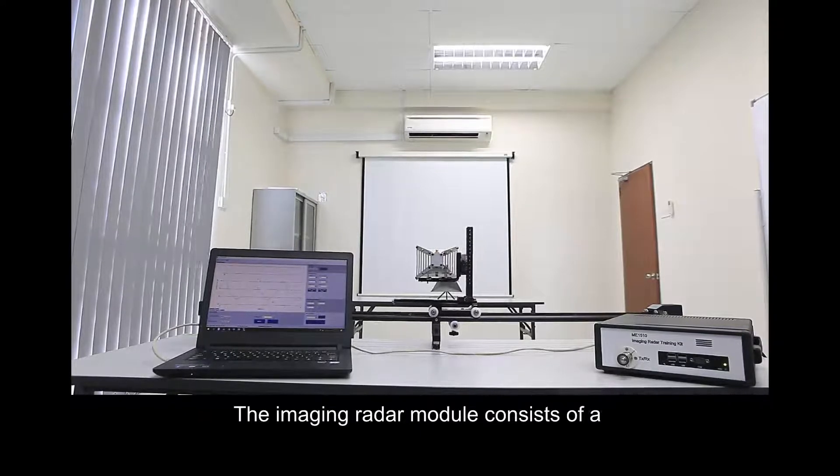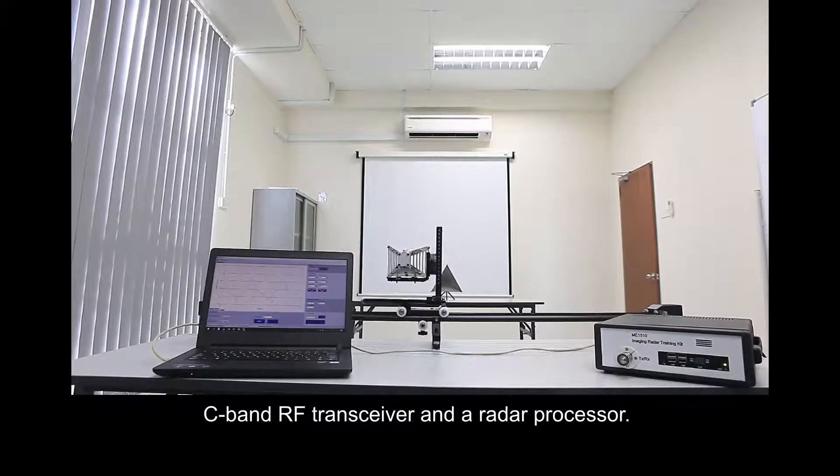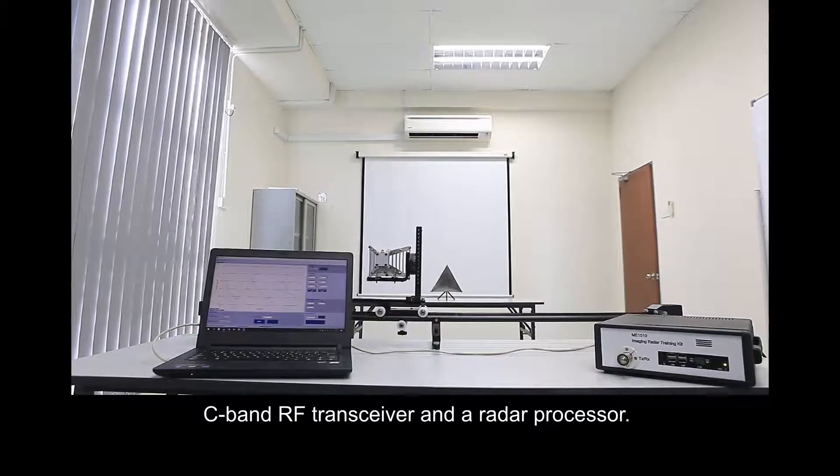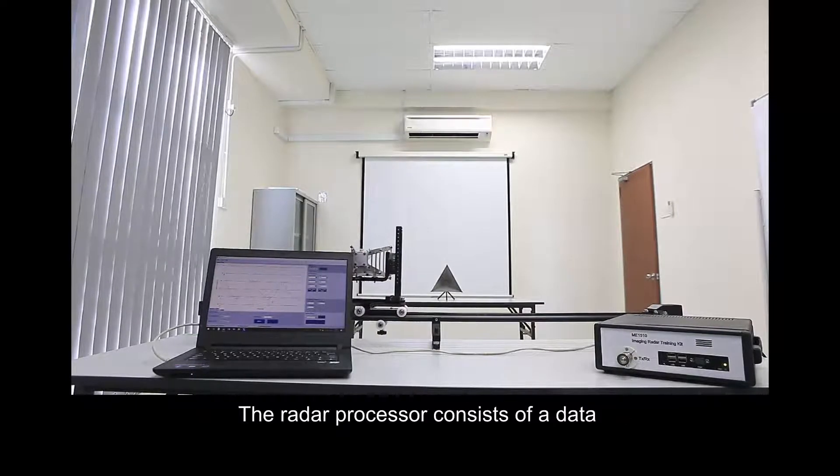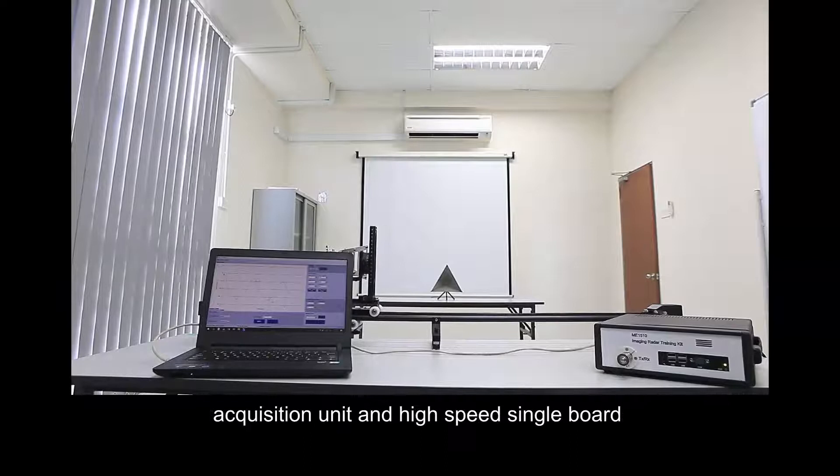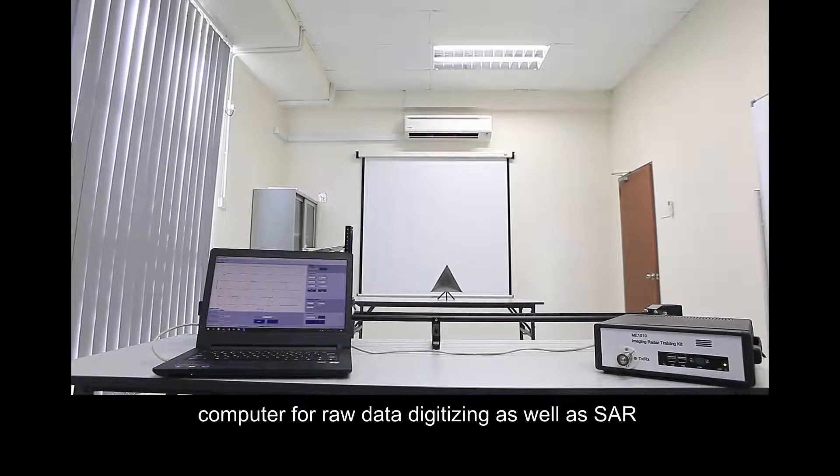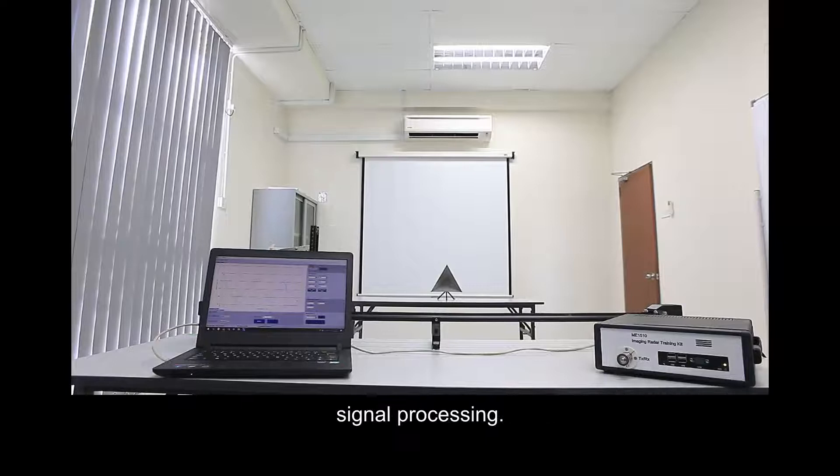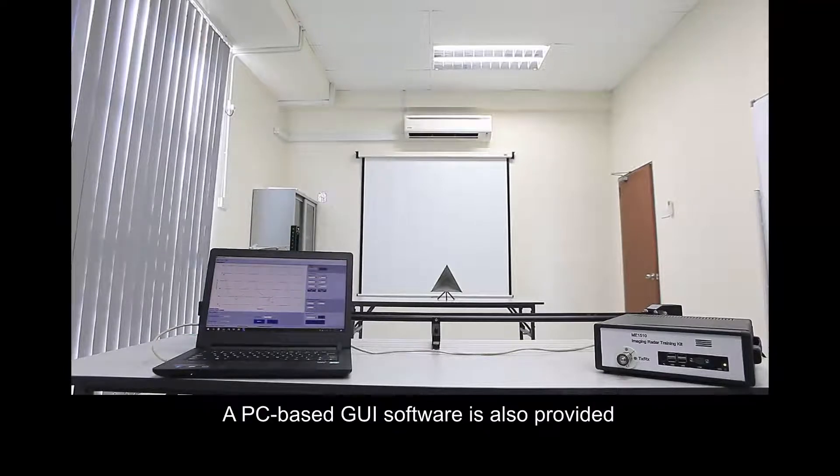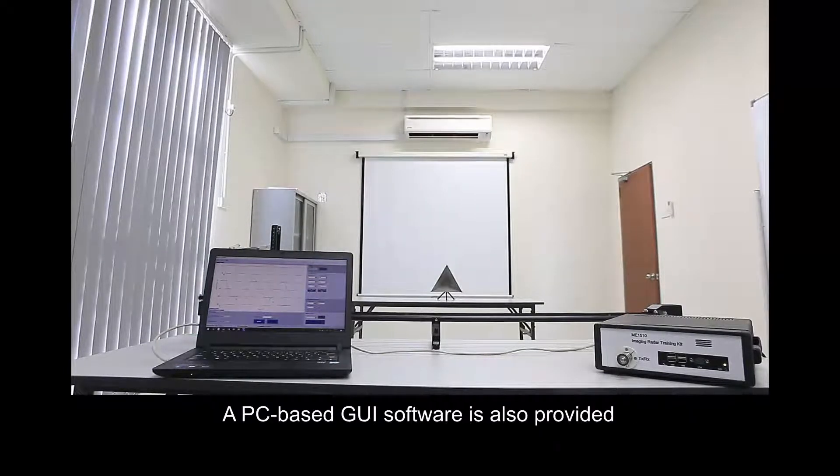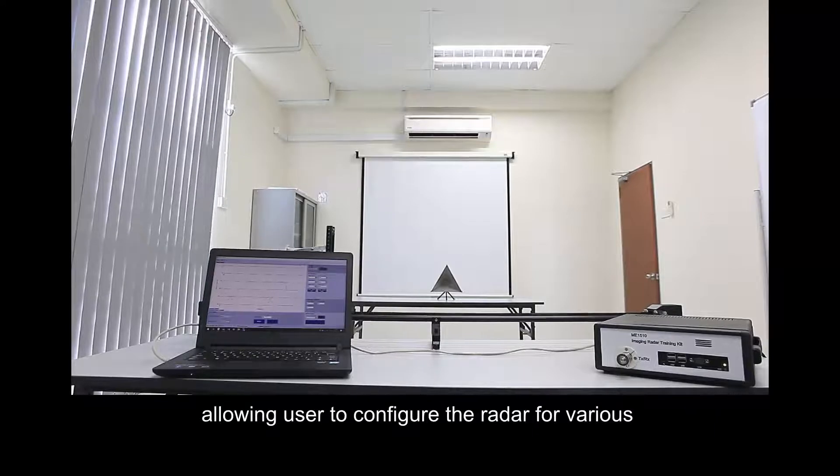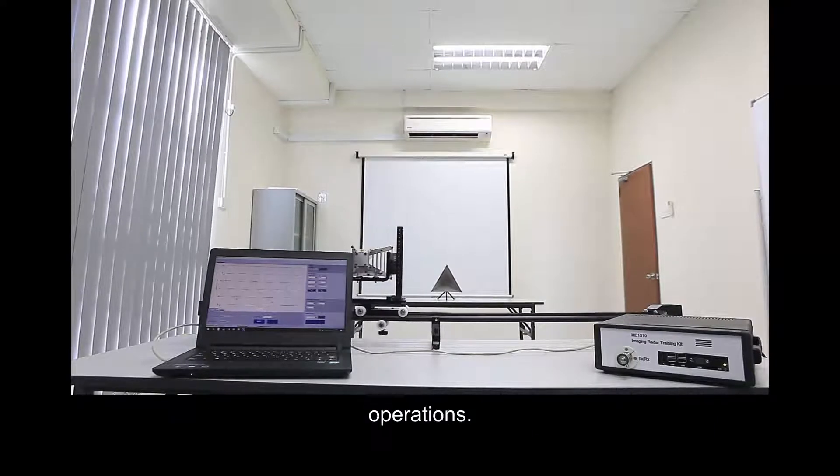The imaging radar module consists of a C-band RF transceiver and a radar processor. The radar processor consists of a data acquisition unit and high-speed single-board computer for raw data digitizing as well as SAR signal processing. A PC-based GUI software is also provided allowing users to configure the radar for various operations.